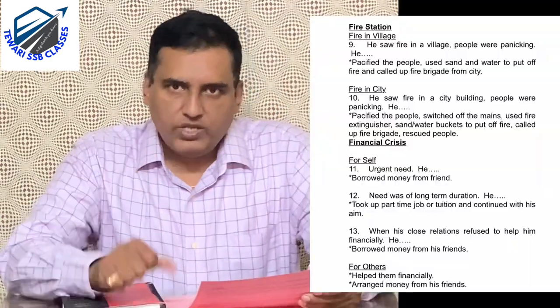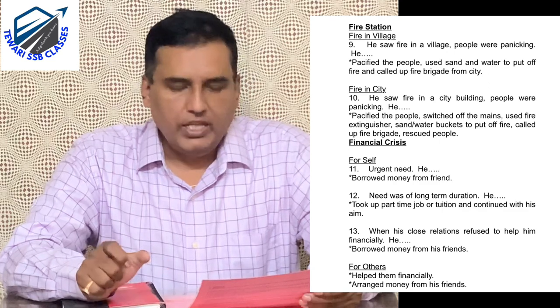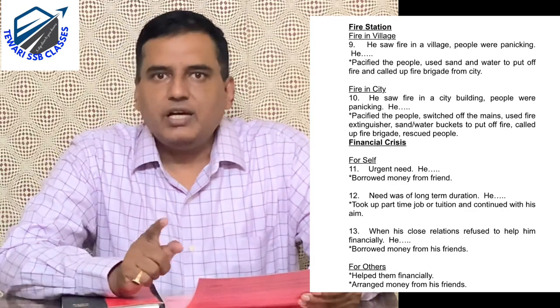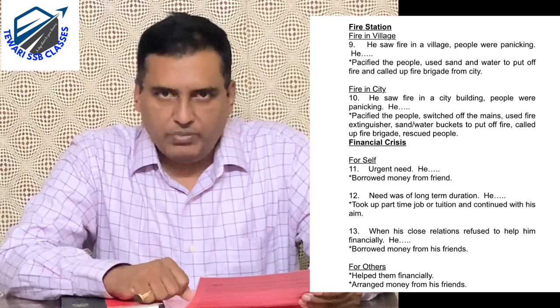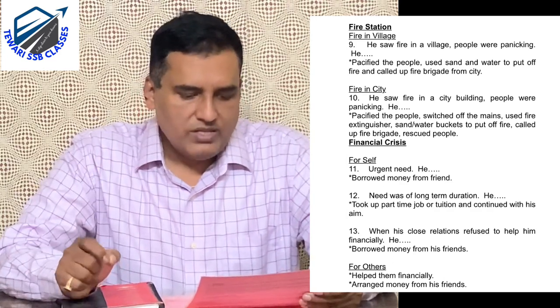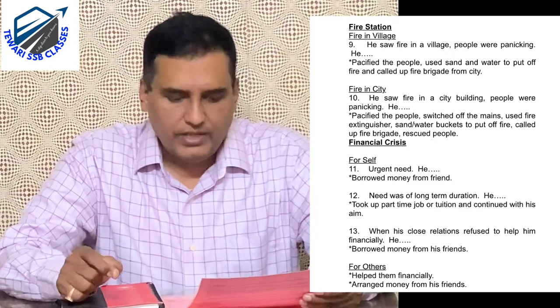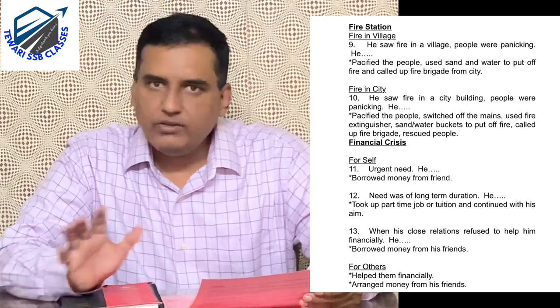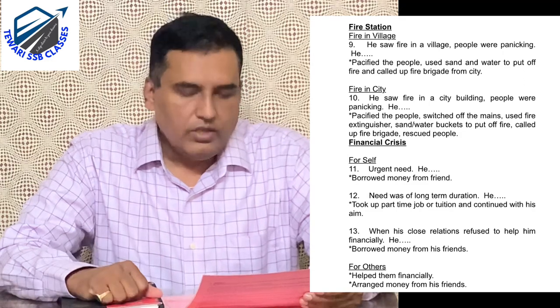Next we deal with fire situations. Fire situations can be of two types - fire in the village and fire in the city. If the situation is in a village, for example: he saw a fire in the village and people were panicking. The first action you should take is to pacify the people. Template answer: he pacified the people, used sand and water to put off the fire, and called the fire brigade from the city.